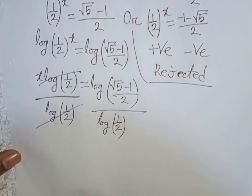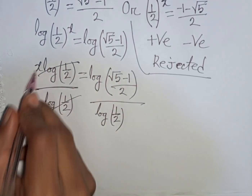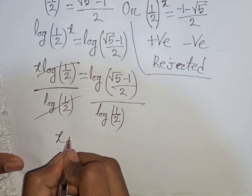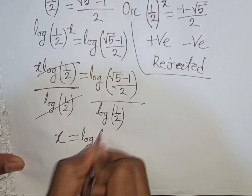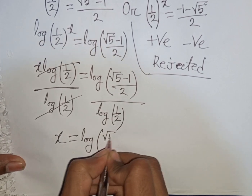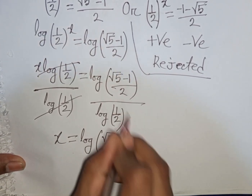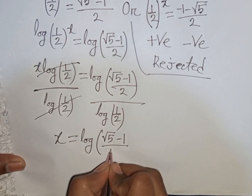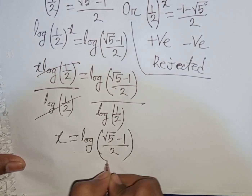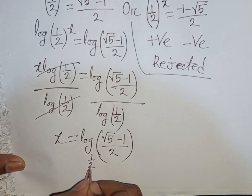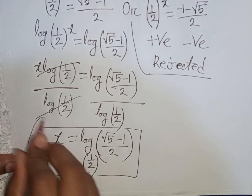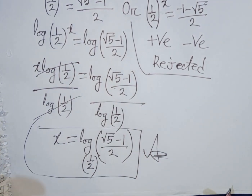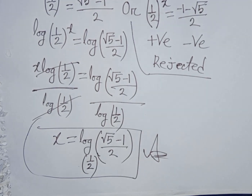So X = log((√5 - 1) / 2) / log(1/2). This is the value of X — our final answer. I make videos with great difficulty, so please like, comment, and subscribe to the channel. Thank you.